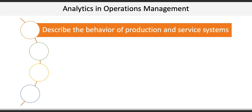The next learning objective helped explain the use of analytics in OM and how internal and external measures are used. Business analytics can be used to describe the behavior of production and service systems — this can tell us how efficient our production line is, or how responsive we are with handling customer support calls, right down to the average time per call for a specific type of support issue.